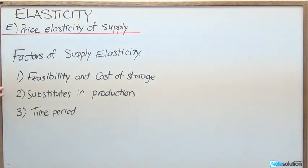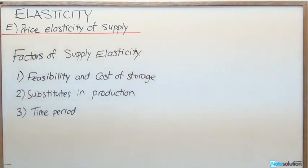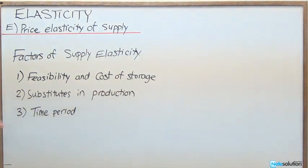So what exactly do these all mean? For the first one — feasibility and cost of storage — when a firm decides to produce a particular quantity, they need to know how long that good is going to be able to stay on the shelf.